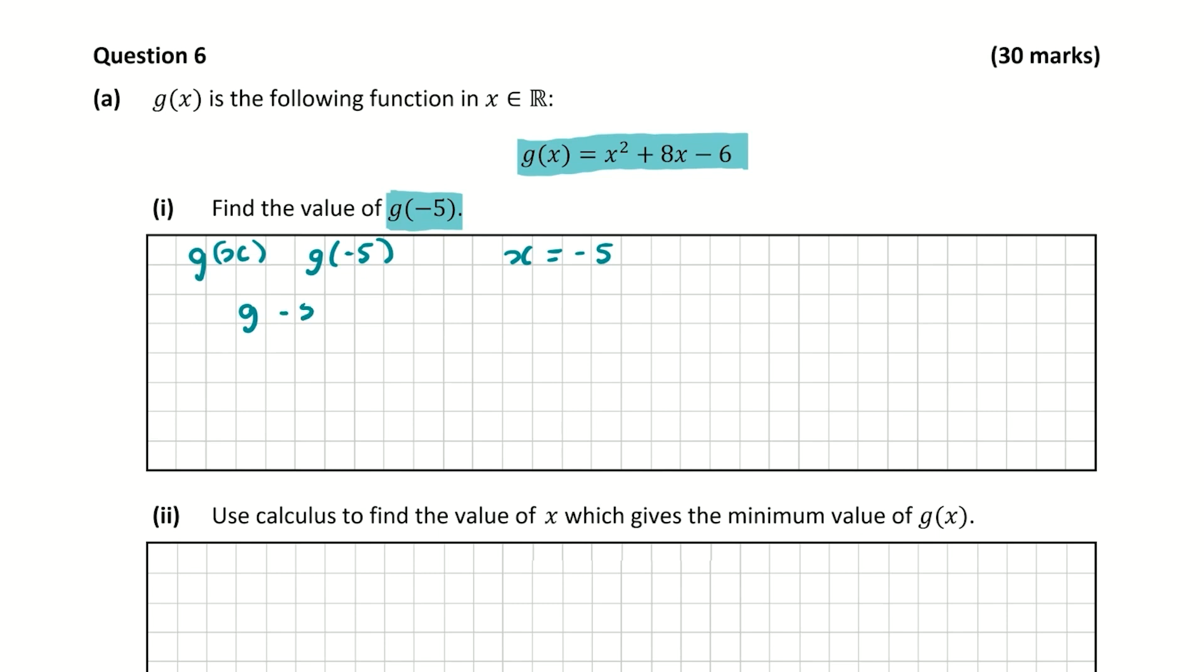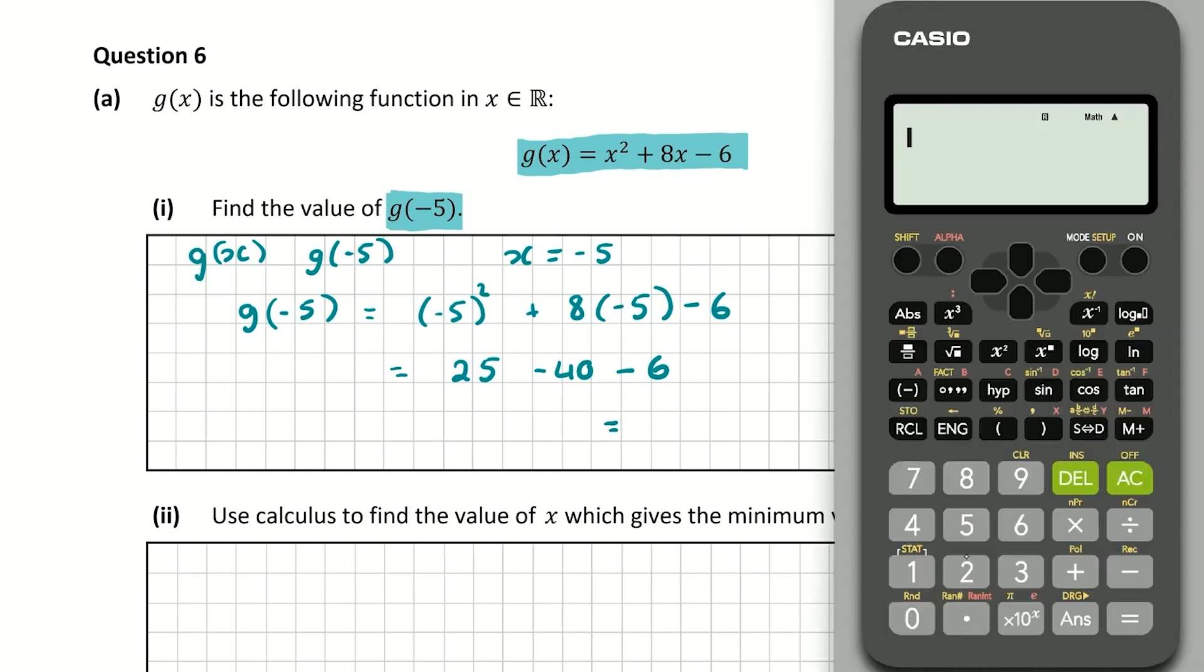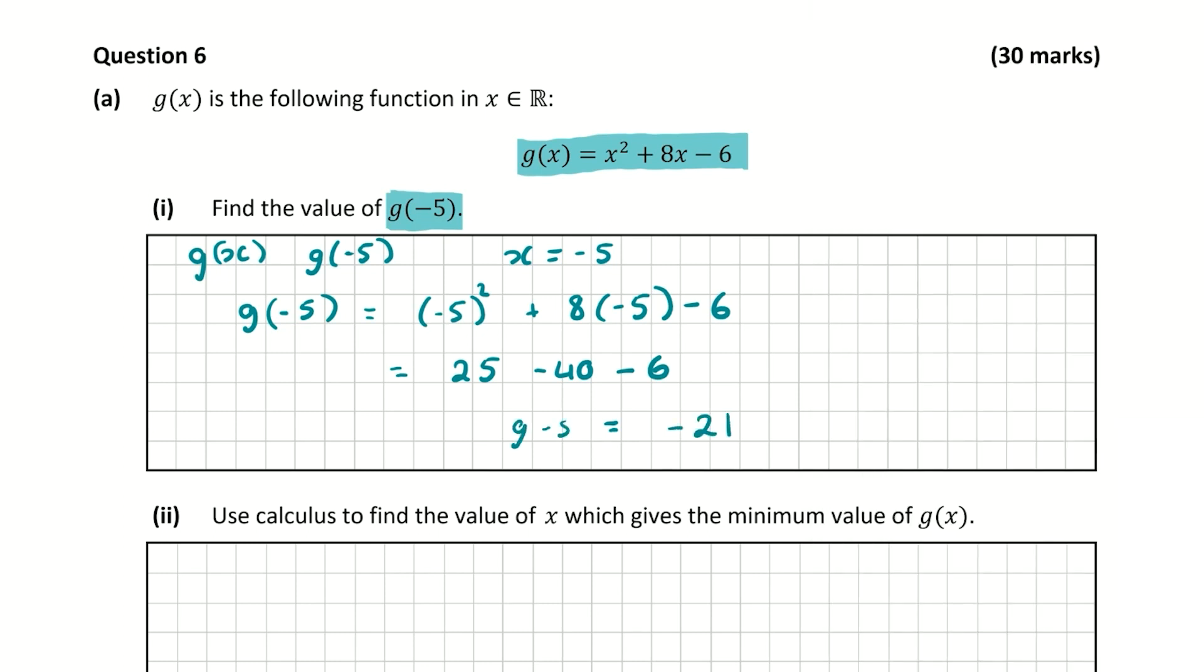So g(-5), I'm just putting in minus 5 everywhere where x was. Then we have (-5)² plus 8 by (-5) minus 6. So minus 5 squared is 25, and then we have 8 multiplied by minus 5 is minus 40 minus 6. So we have 25 minus 40 minus 6, and that gives us minus 21. So g(-5) equals minus 21. This is our final answer and for getting this correct you're going to get a total of 5 marks.